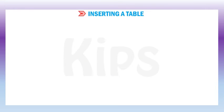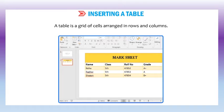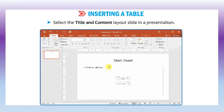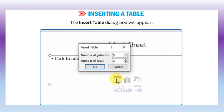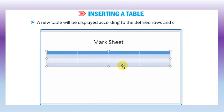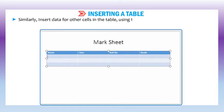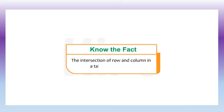Let us learn how to insert a table. PowerPoint provides additional features to organize information in a table format. A table is a grid of cells arranged in rows and columns. It is very useful in organizing and representing data in an effective manner. To insert a table, select the title and content layout slide in a presentation. Click on the insert table icon on the slide. The insert table dialog box will appear. Define the number of columns and rows and click OK. A new table will be displayed according to the defined rows and columns. Place the mouse pointer in the first cell of the table and type a heading. Press the tab key and insert data for other cells using the tab and arrow keys or clicking in the required cell. The intersection of a row and column in a table is called a cell.